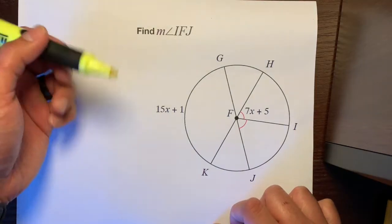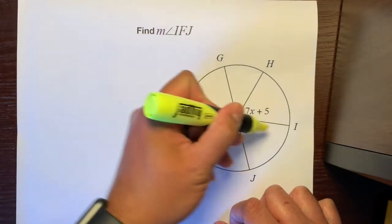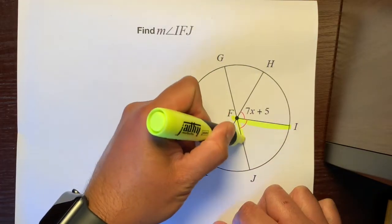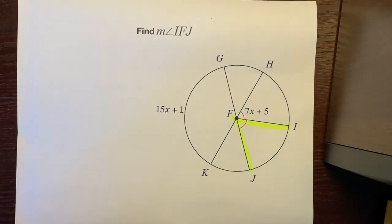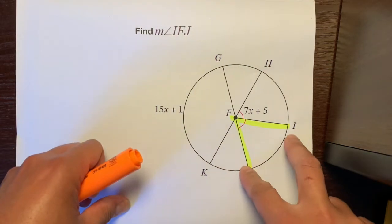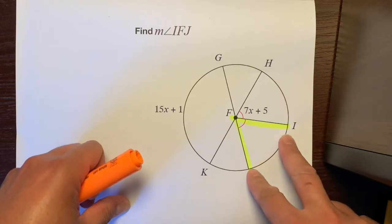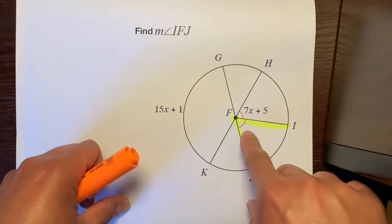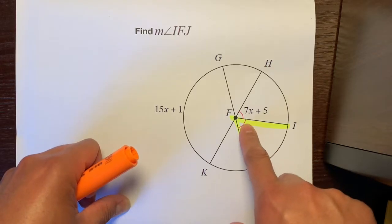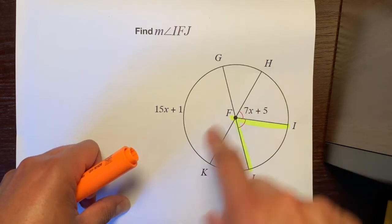Let's highlight what we're trying to figure out. Angle I to F to J. Let's follow this trail on what we need to do. We have one piece of information for IFJ. We have this arc, and this arc tells us that this angle, this central angle, is congruent to this central angle,